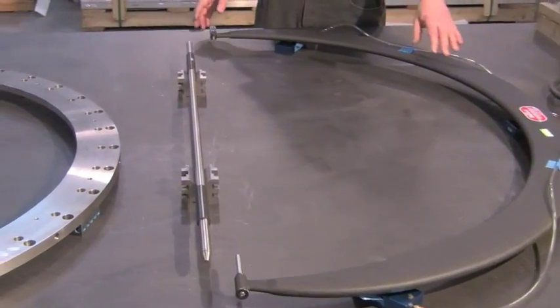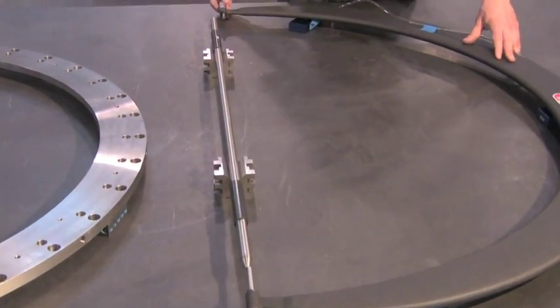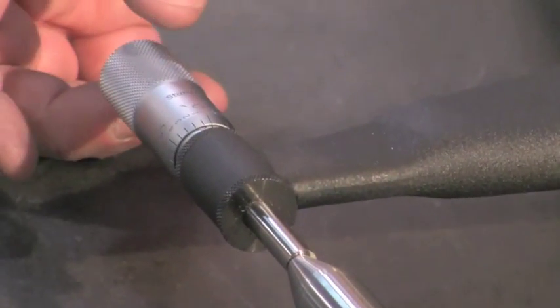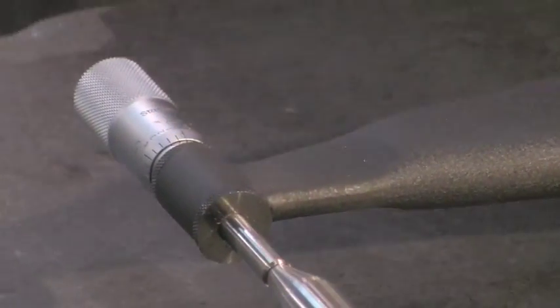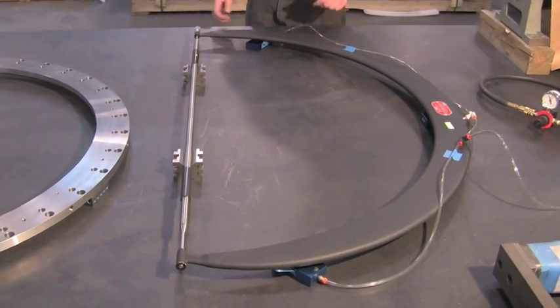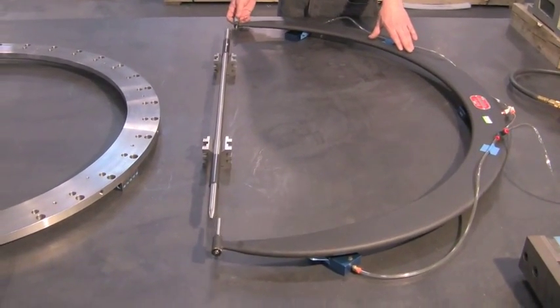Now he's going to bring it over and calibrate it on the master. So he can set the micrometer to a known reference. Now that it's calibrated, he can remove the reference from the area.